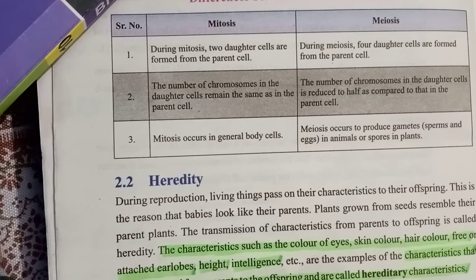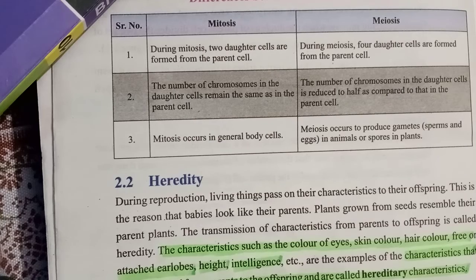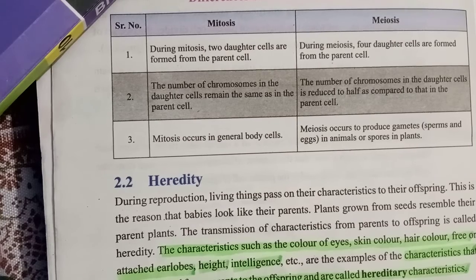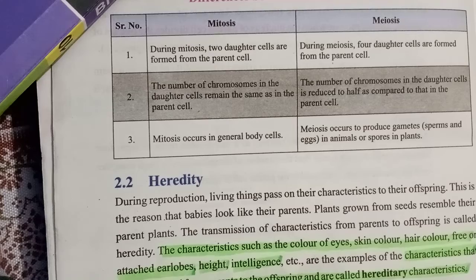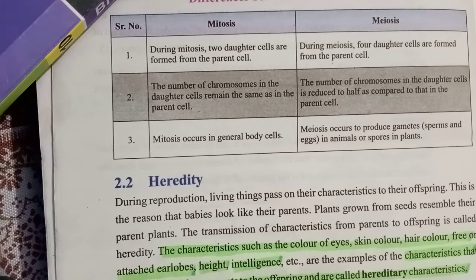Students, we are doing chapter number two and the topic is cell division. In this we have done the basic introduction of cell division — what cell division actually is. Then we did the two types of cell division: mitosis, which is the type in which parent cells divide into two daughter cells having the same number of chromosomes, and meiosis, which is a type in which a parent cell divides into four daughter cells having half the number of chromosomes.